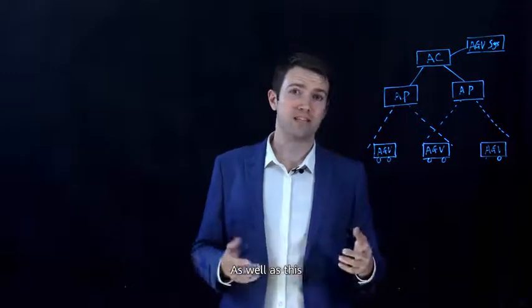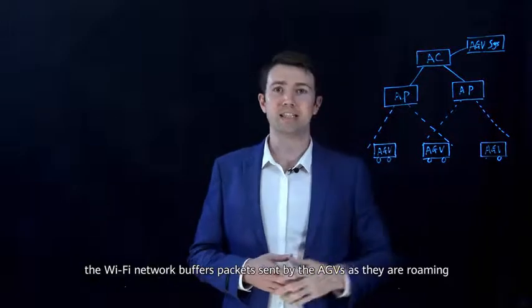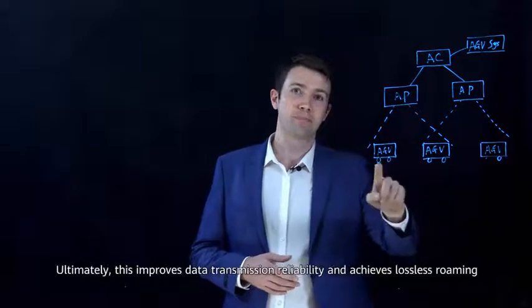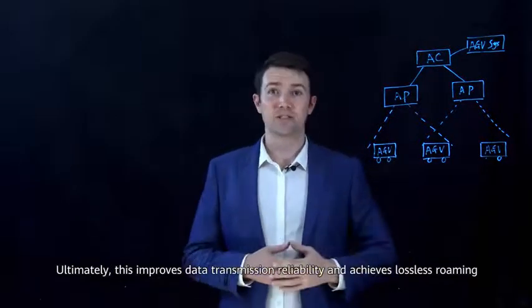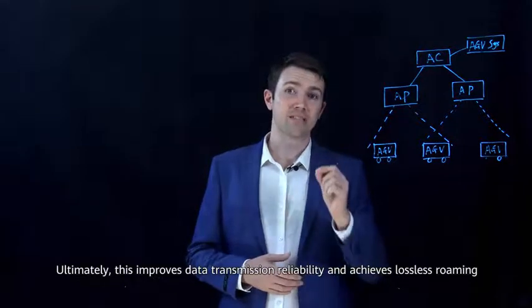As well as this, the Wi-Fi network buffers packets sent by the AGVs as they are roaming. Ultimately, this improves data transmission reliability and achieves lossless roaming.